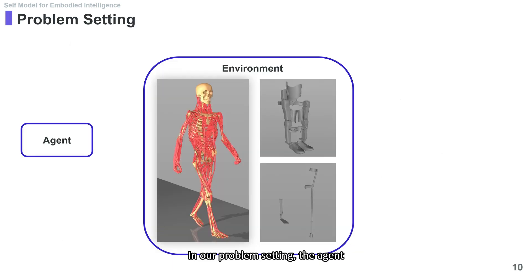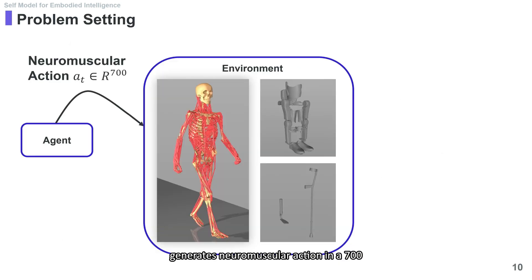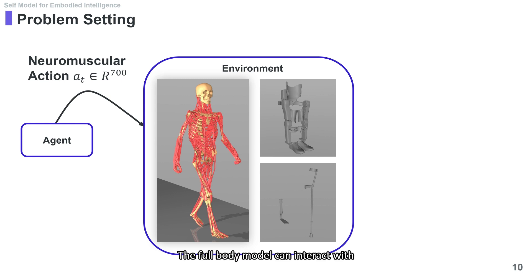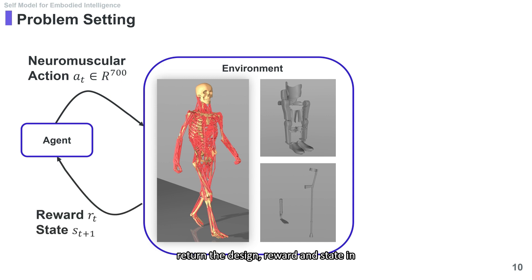In our problem setting, the agent generates neuromuscular action in a 700-dimensional space to control the musculoskeletal simulation. The full-body model can interact with robots and devices in the environment and return the designed reward and state in the simulation to the agent.